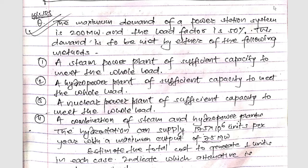Hello guys and welcome to my channel. Today I'm back with another important numerical on power plants. This numerical was once asked in the 2016 spring and 2015 spring exams. The maximum demand of a power station is given as 200 megawatt and the load factor is given as 50%. This demand is to be met by either of the following methods.